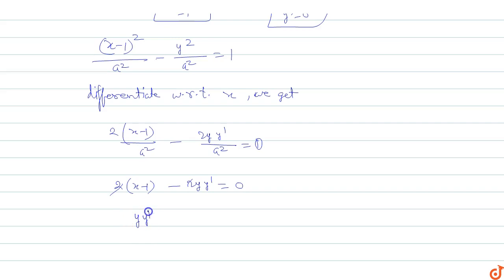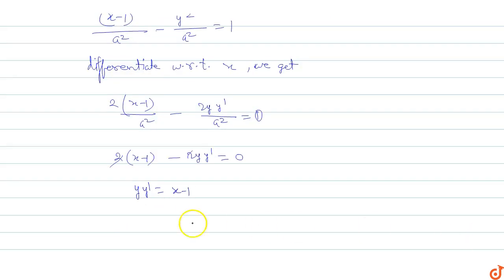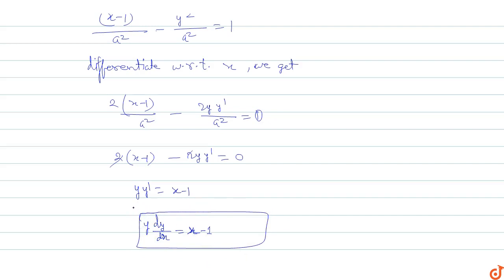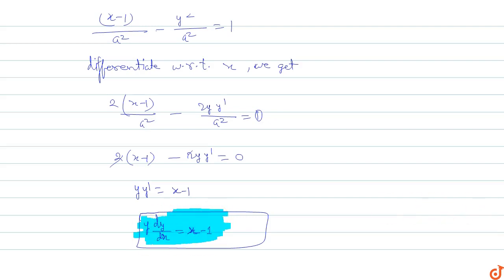So y·y₁ = dy/dx, giving the differential equation: y · dy/dx = x - 1. This is the differential equation of the family of hyperbolas whose asymptotes are the lines x + y = 1 and x - y = 1. The answer is y · dy/dx = x - 1.